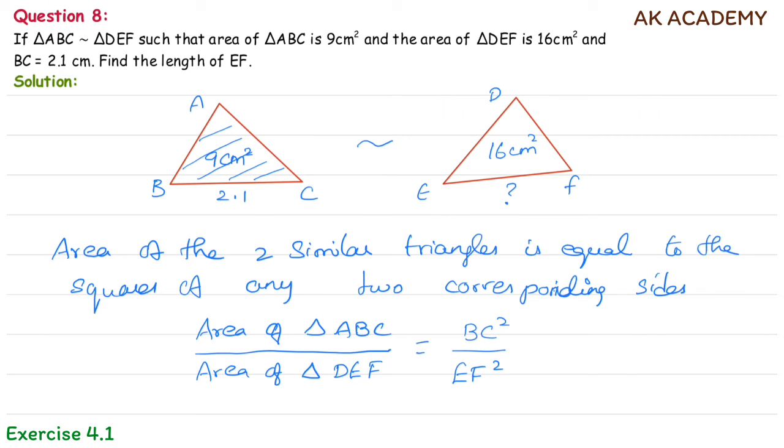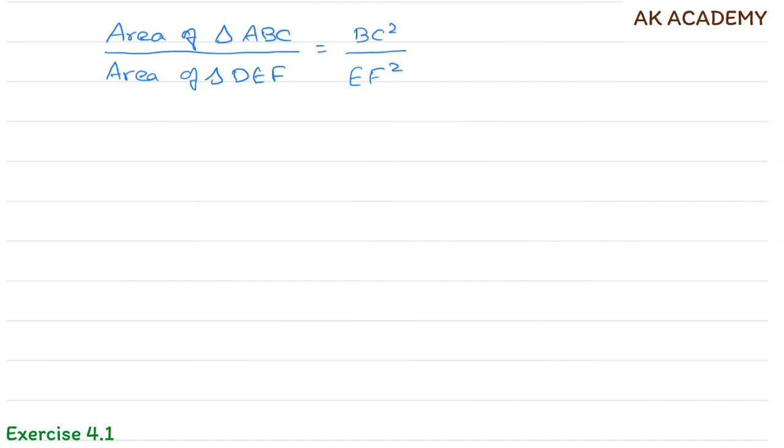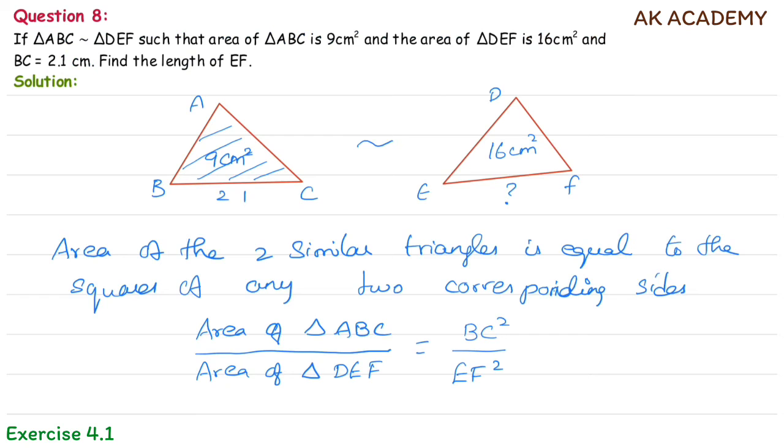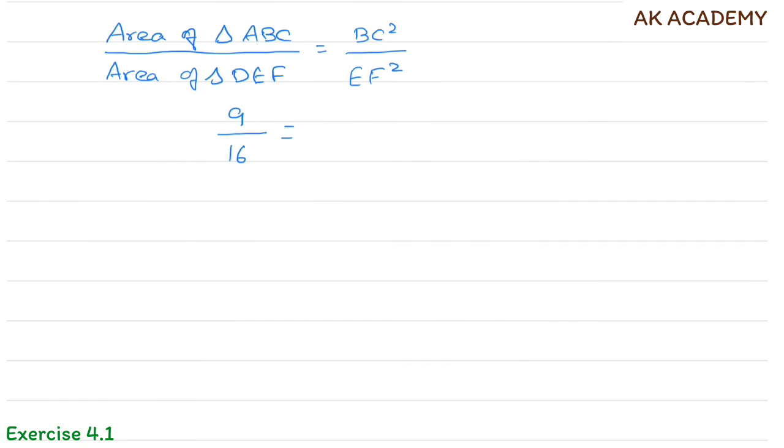So 9/16 equals BC², which is 2.1 cm, squared, divided by EF².